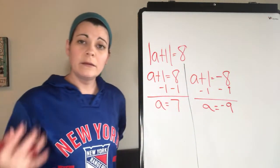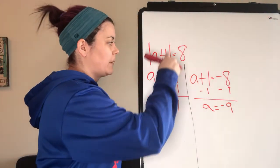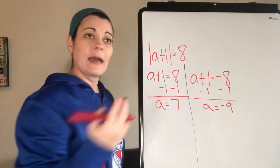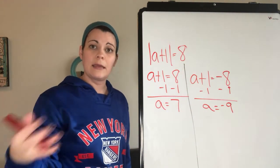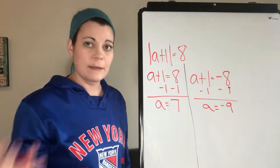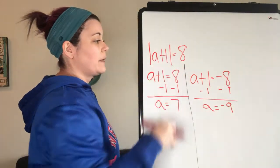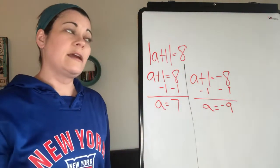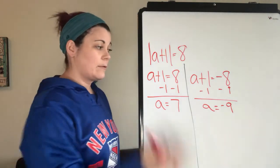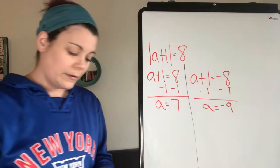We can check it. If we plug in 7, 7 + 1 is 8, and the absolute value of 8 is 8 because 8 is 8 spaces away from 0. And negative 9 + 1 is negative 8, and negative 8 is also 8 spaces away from 0. So they both work. Let's do another example.